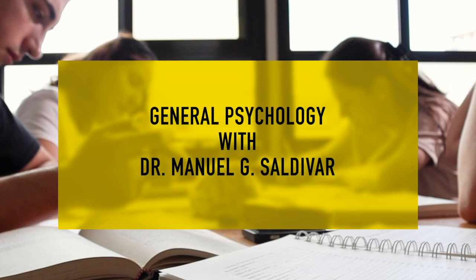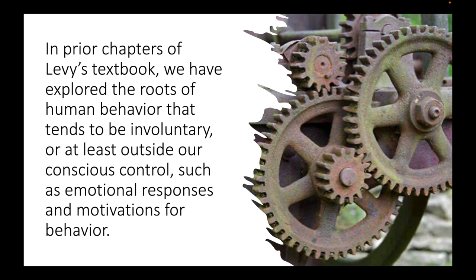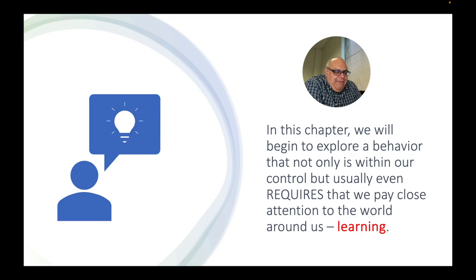So let's get started. In prior chapters of this textbook, we've explored the roots of human behavior that tend to be involuntary or at least outside of our conscious control, such as emotional responses and motivations for behavior. In this chapter, chapter 5, we're going to begin to explore a behavior that not only is usually within our conscious control but often requires that we really pay close attention to what we're doing and especially be conscious of the stuff happening in the world around us. And this behavior is learning.